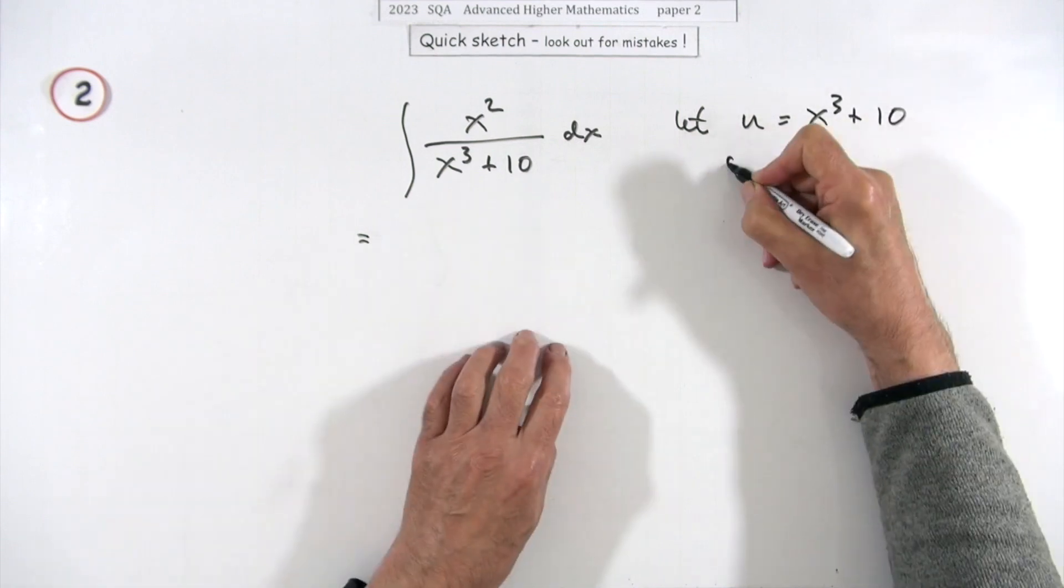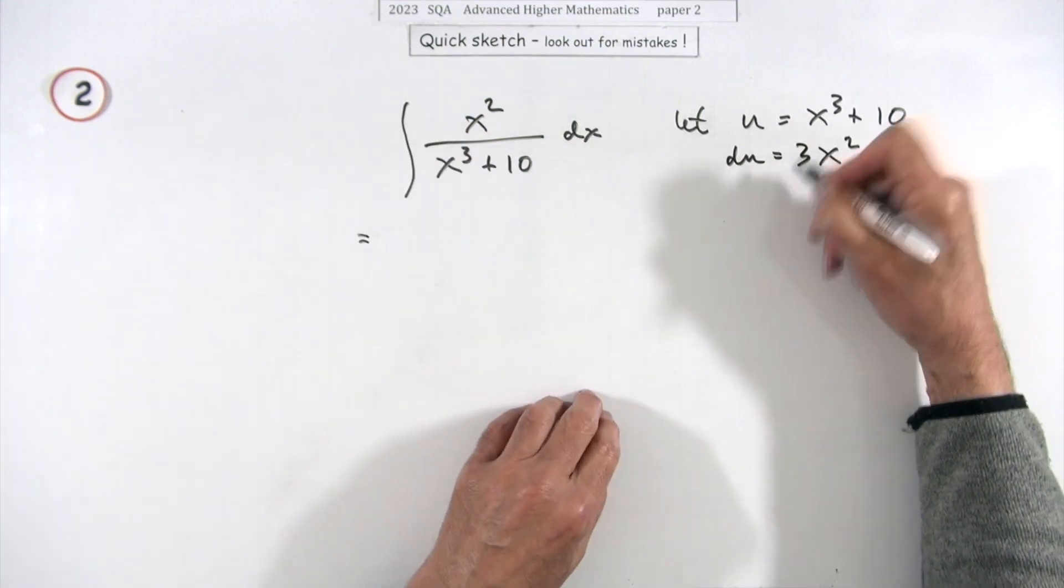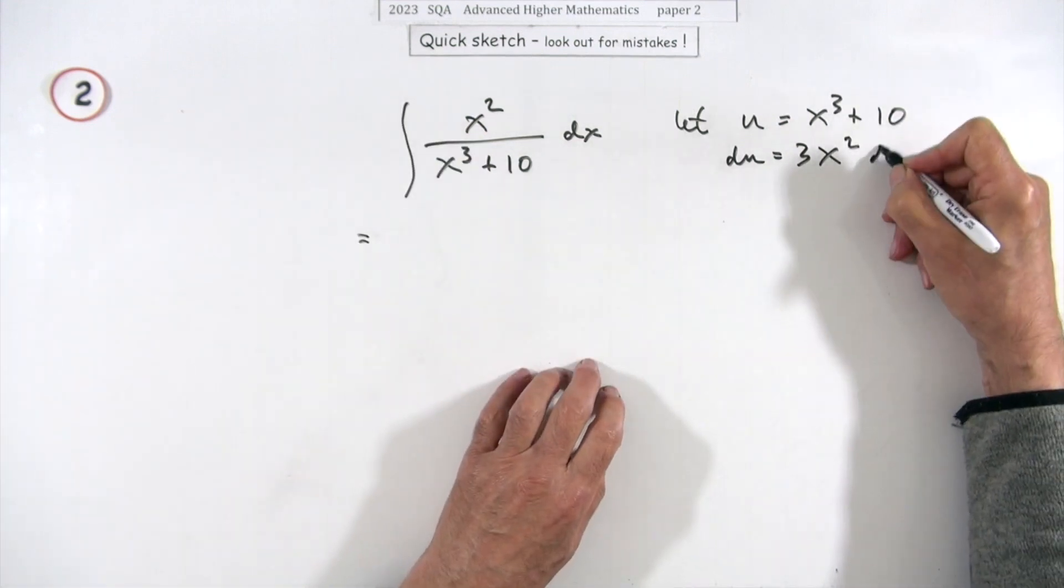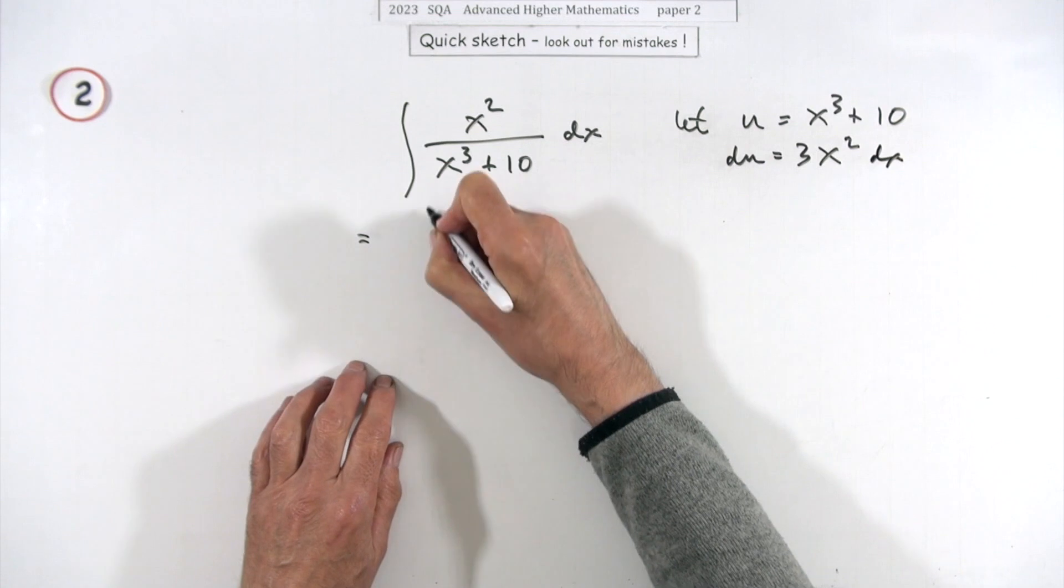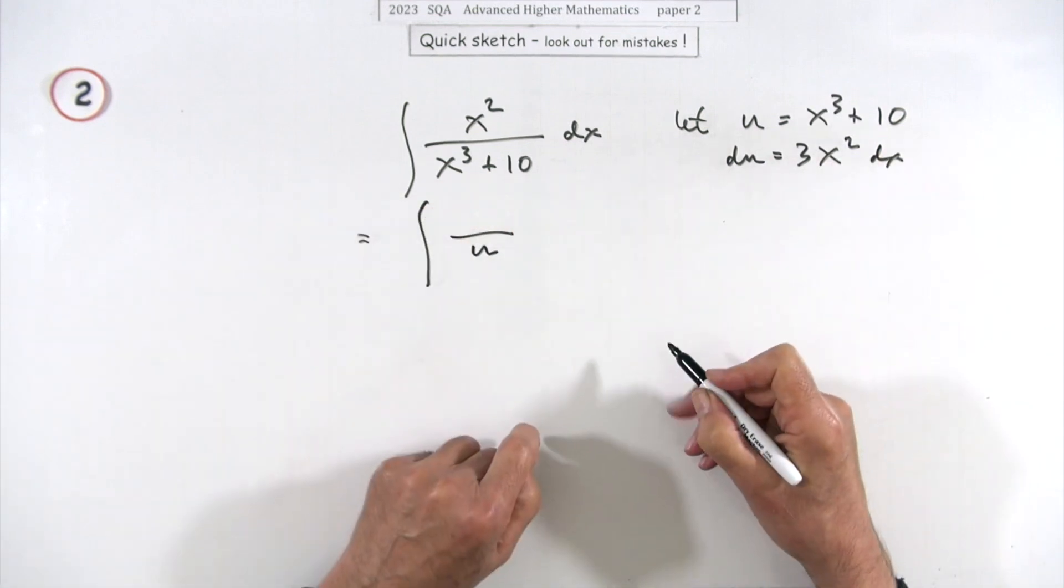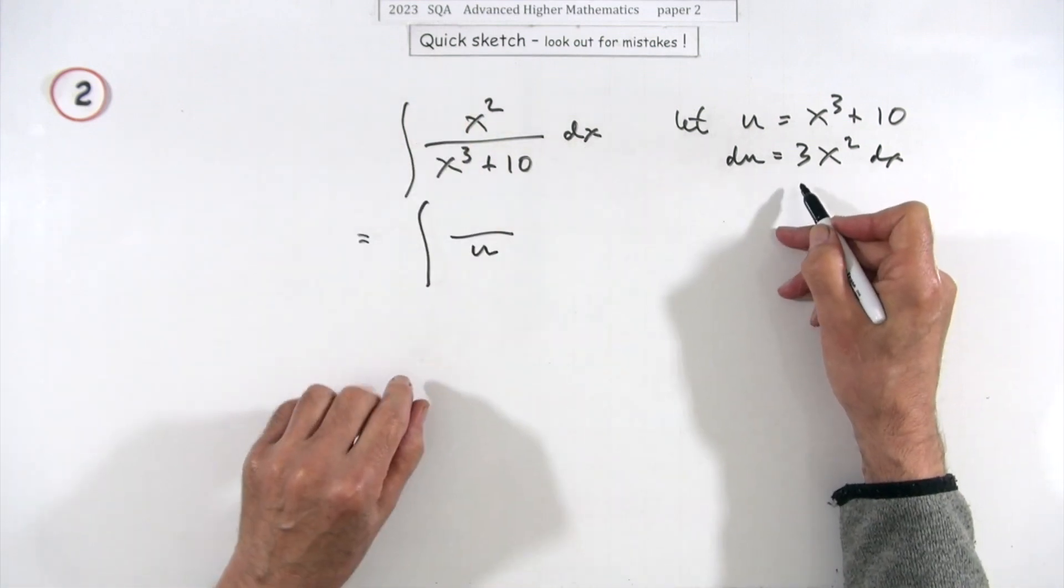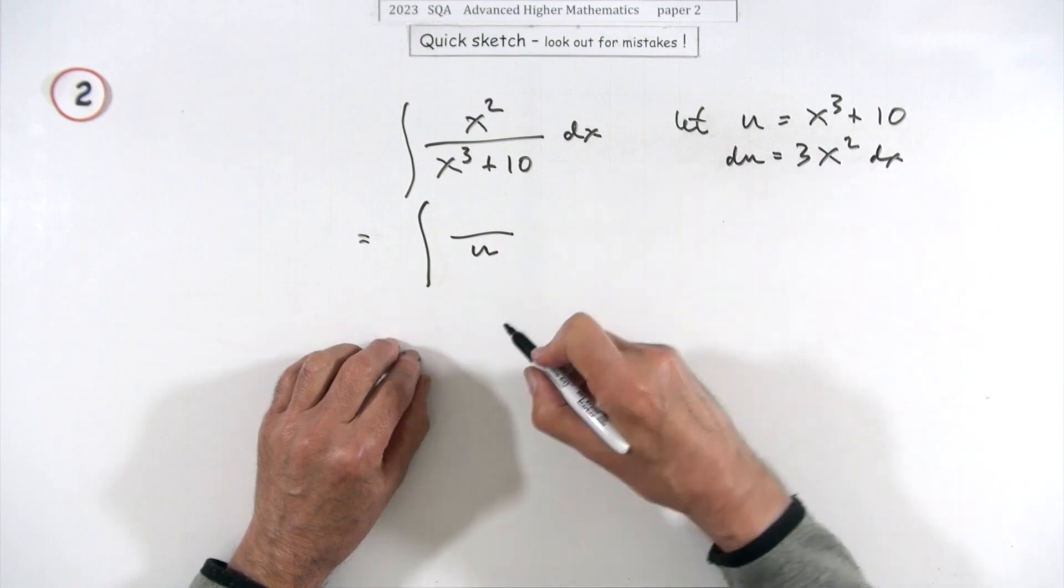In which case, du will be 3x² dx. There's your x², doesn't matter about the constant plus 10. So you just replace the parts then - that whole thing gets replaced by u, the x² dx I've got that part, but I haven't got 3 times it, so I'll have to take that out. That means it'll be one third of du over u.